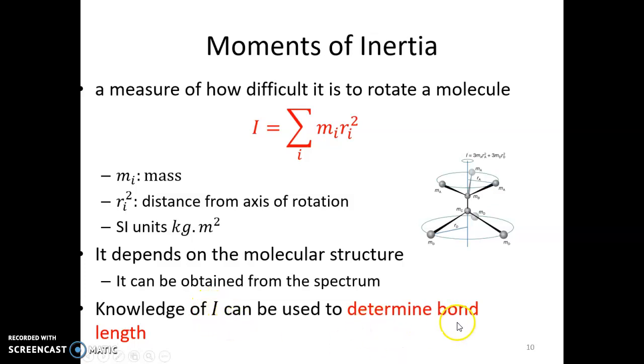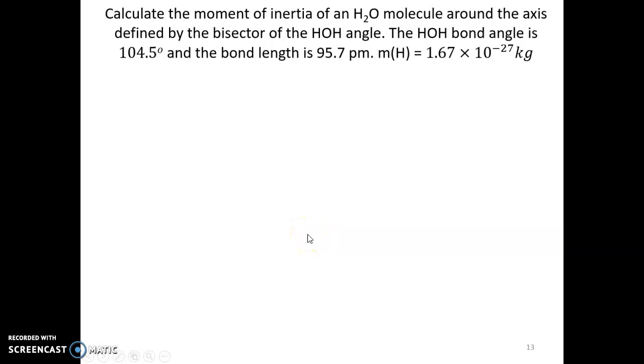So there's a sample calculation here. The moment of inertia of the water molecule around the axis defined by the bisector of the HOH angle. The HOH bond angle. It's a good idea to always list the parameters from the question. So here we have sketched the water molecule. Bond distance rOH, the bond distance between O and H is 95.7 picometers. The rotating distance we have, taking this to be rH, and then the bond angle is 104°. The rotating axis bisects this, so we have this angle to be 104.5° divided by 2.